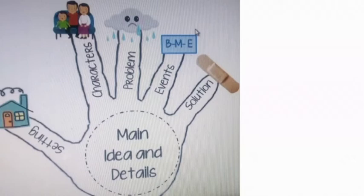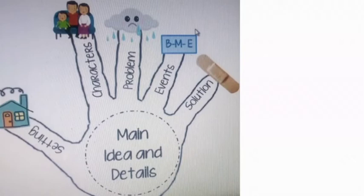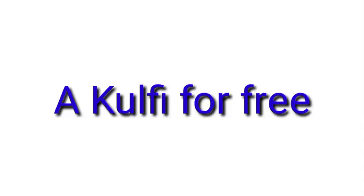Next comes event. Event means something happens — it makes the story very interesting. There may be one event or two events, or many events in the story. Finally, the story comes to a beautiful solution because the problem which was created by another character is solved toward the end of the story.